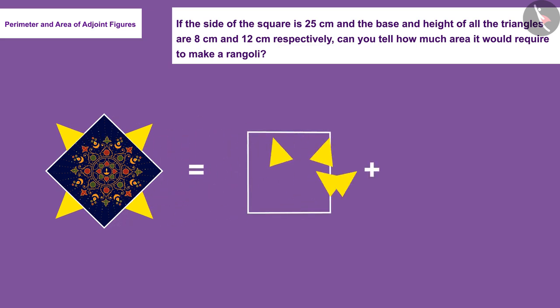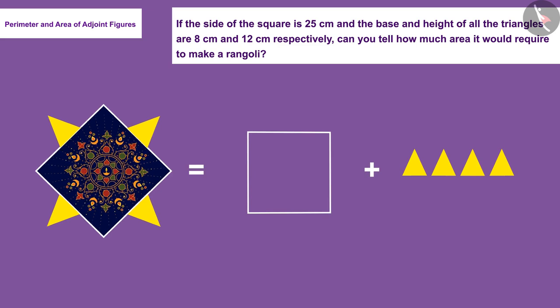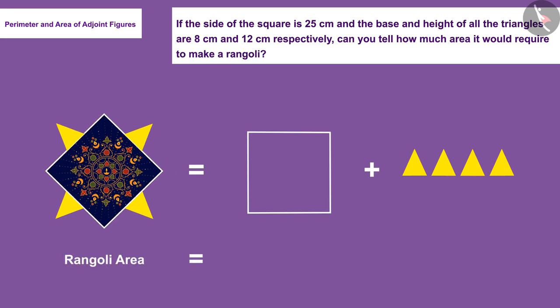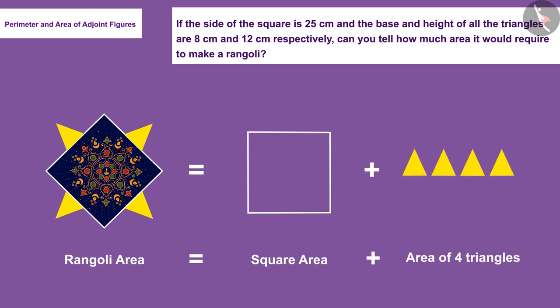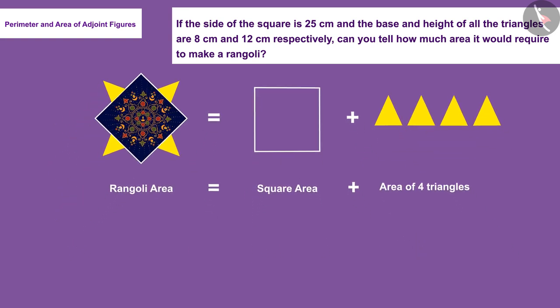As you can see, this rangoli is made of a combination of a square and four triangles. Therefore, the area of the rangoli will be equal to the sum of the area of the square and the area of the four triangles.